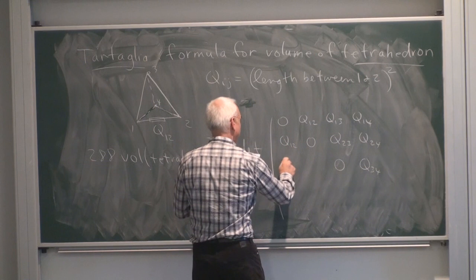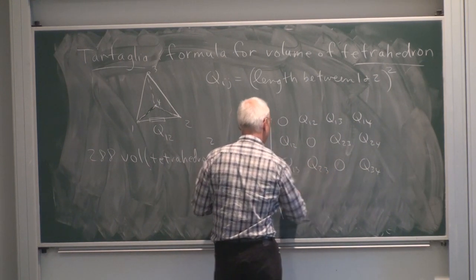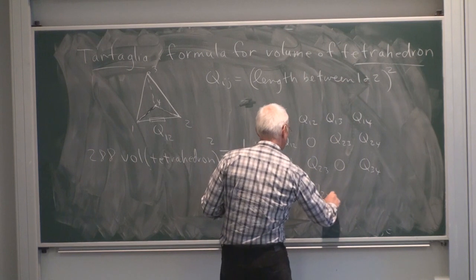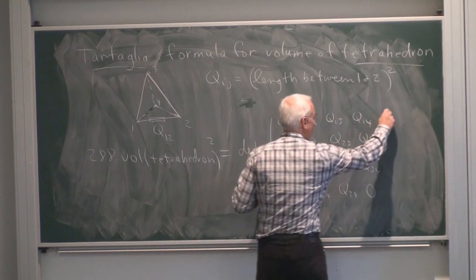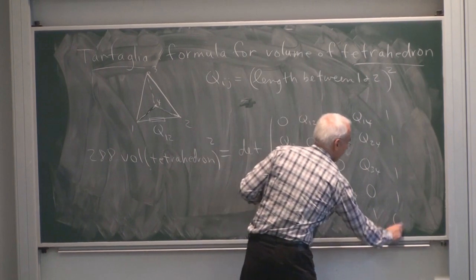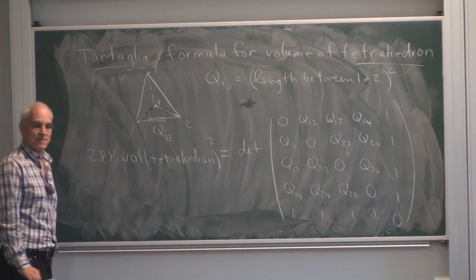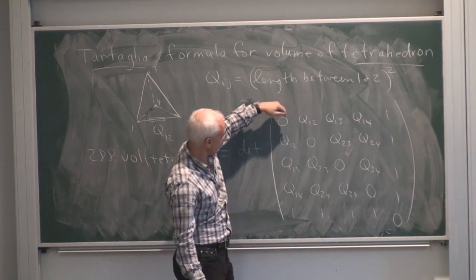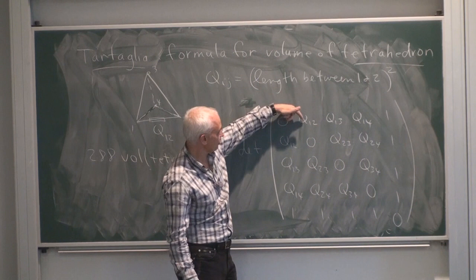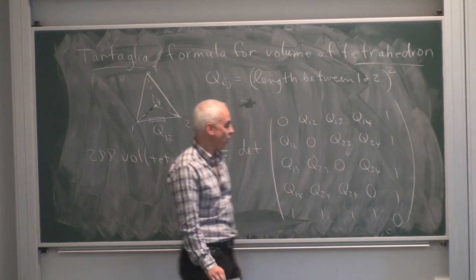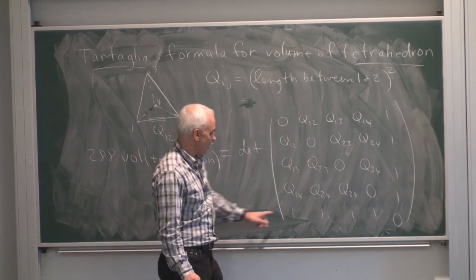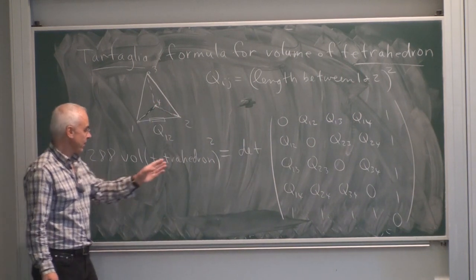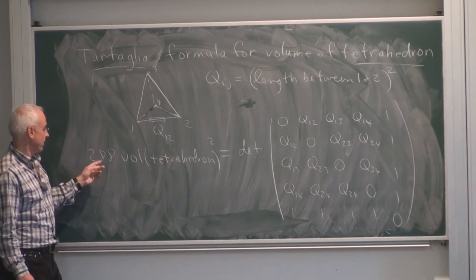It's sort of symmetrical, so the same thing on the other side. And there's a row and column of 1s with a 0 in the corner. So it's a 5×5 matrix formed from the quadrances of the six edges — Q₁₂, Q₁₃, Q₁₄, Q₂₃, Q₂₄, Q₃₄ — all six edges appearing. Take the determinant of that and you get a big expression in those six quantities. That's the volume squared times 288.